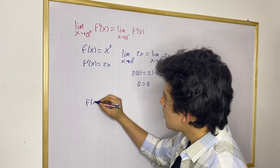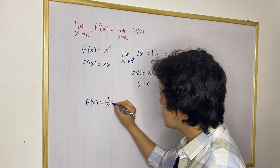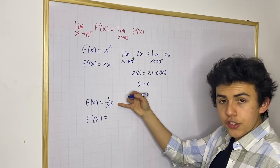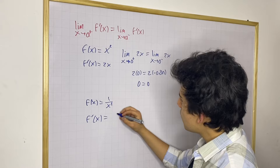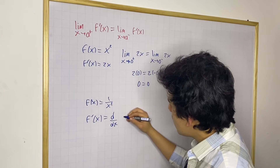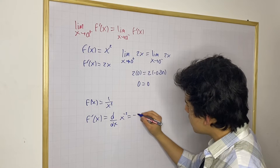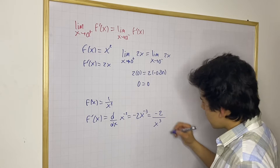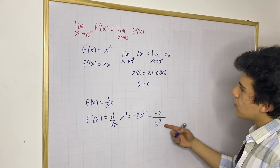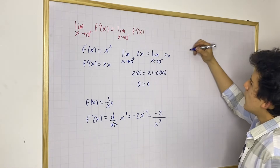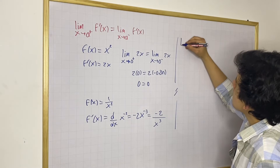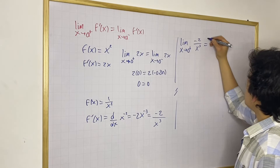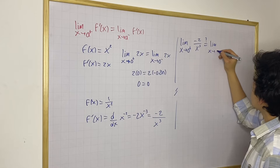Let's say we now have f of x equals 1 over x squared. First, let's find the derivative and see if f is differentiable at x equals 0. We can write this as x to the negative 2 power, so the derivative is negative 2x to the negative 3, which is negative 2 over x cubed. Now let's see what happens when we apply the differentiability definition. We need to check: the limit as x approaches 0 from the right for negative 2 over x cubed, and whether that equals the limit as x approaches 0 from the left.